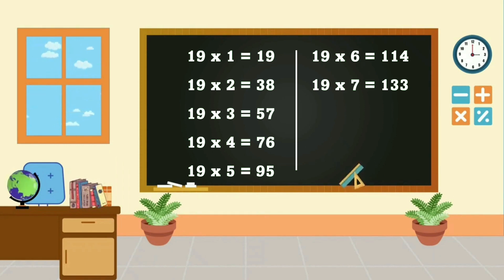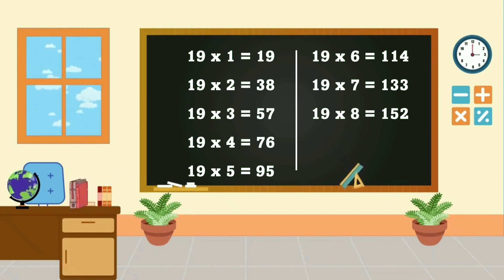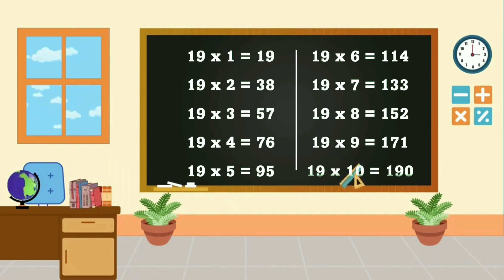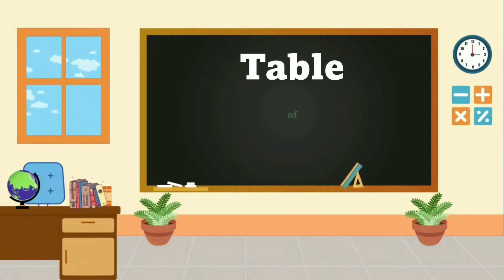19, 7's are 133. 19, 8's are 152. 19, 9's are 114. 19, 9's are 150. 19, 10's are 190. Table of 20.